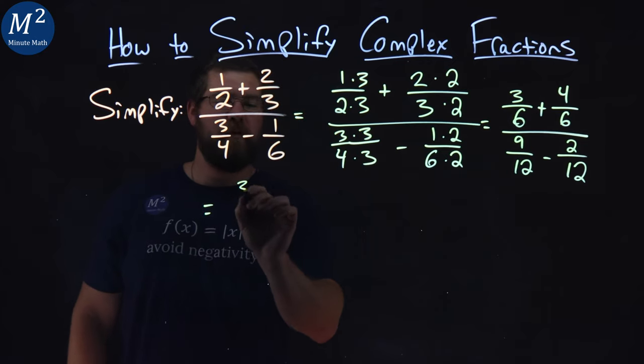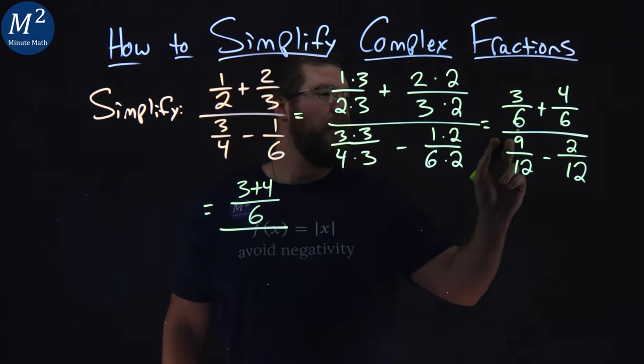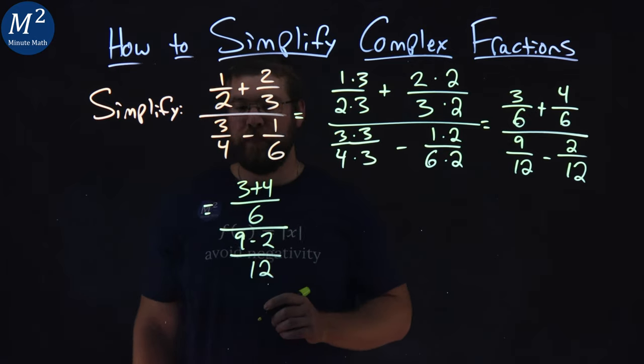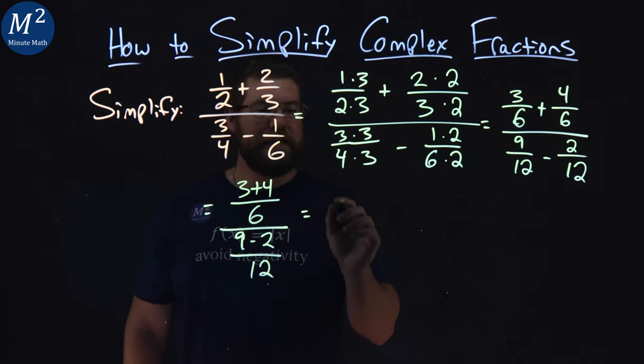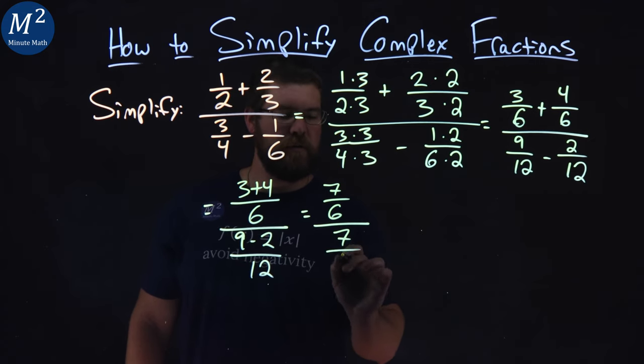We can combine this. We have 3 plus 4 over 6, over 9 minus 2 over 12. From there, let's keep on simplifying. 3 plus 4 is 7 over 6, divided by 9 minus 2 is 7 over 12.